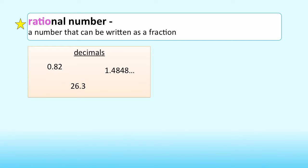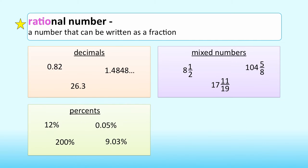Rational numbers include decimals, mixed numbers, percents, and other fractions.